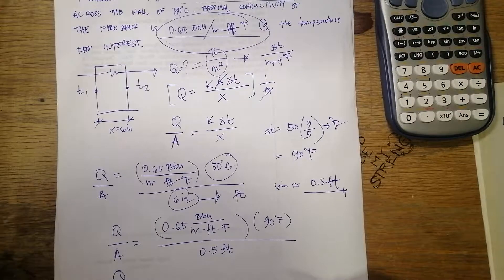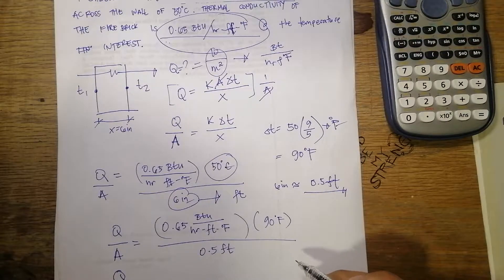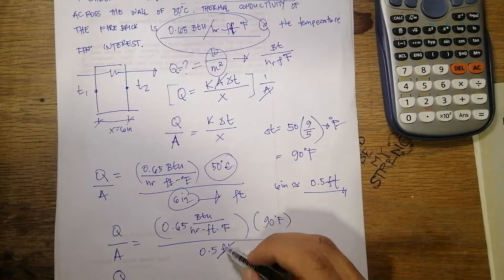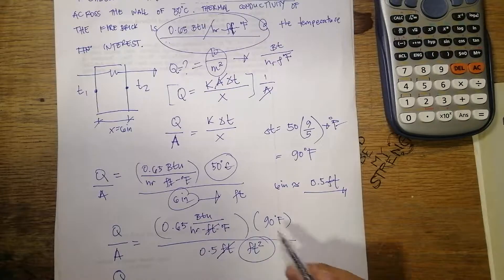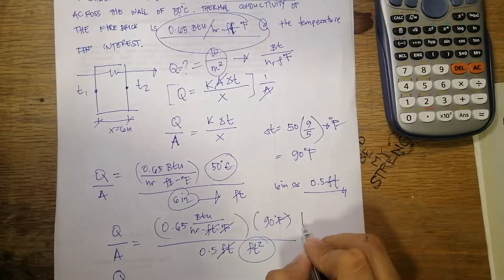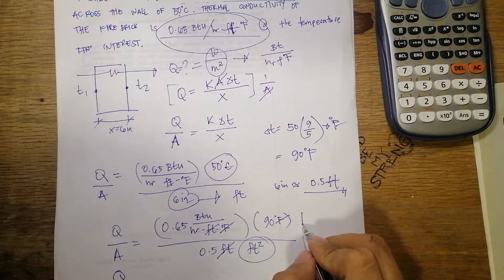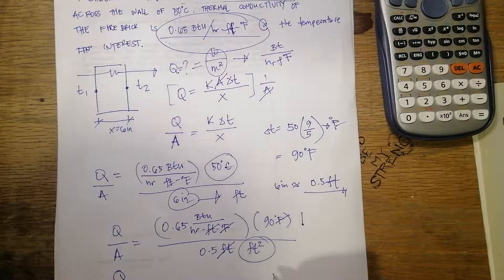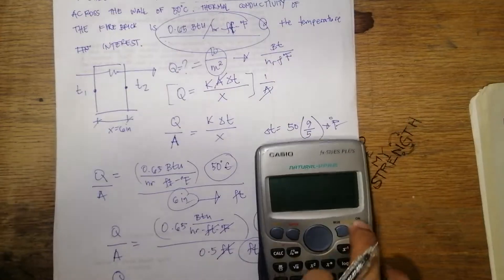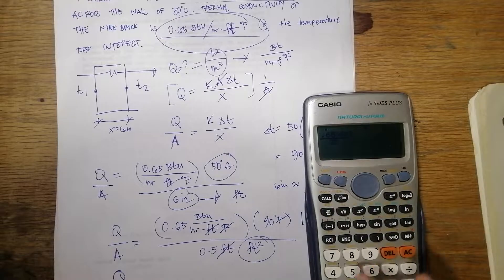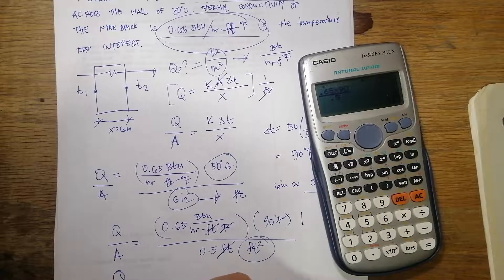Checking the units: the degree Fahrenheit cancels, the feet cancel, and what remains is BTU per hour per foot squared. Calculating: 0.65 times 90 divided by 0.5 equals 117 BTU per hour per foot squared.